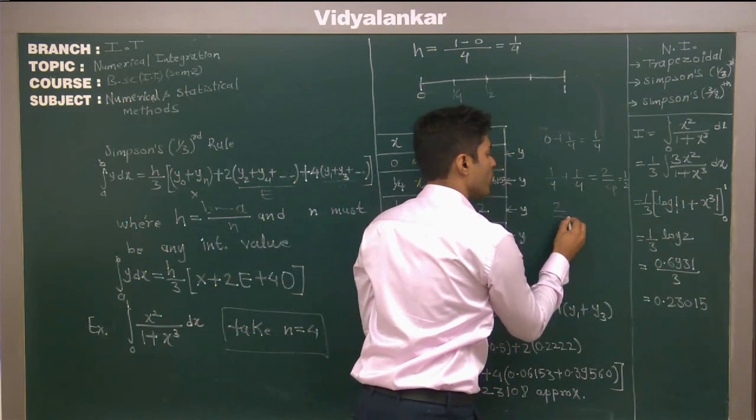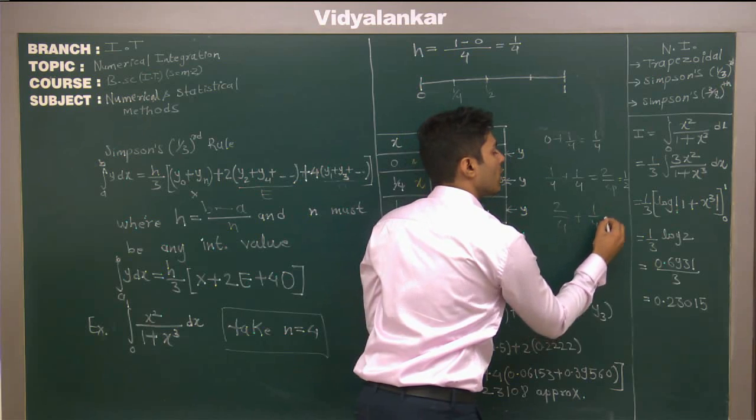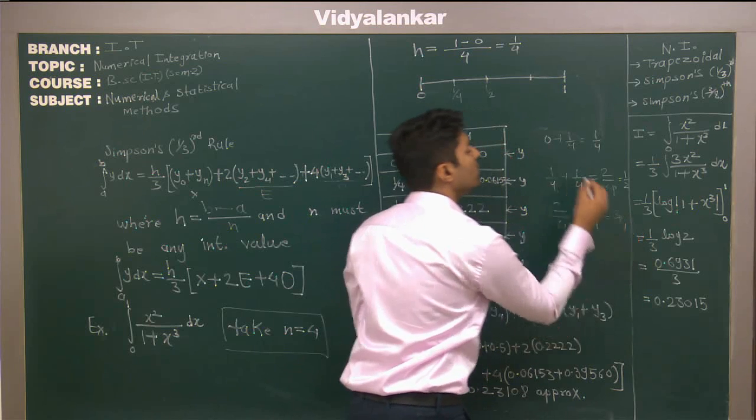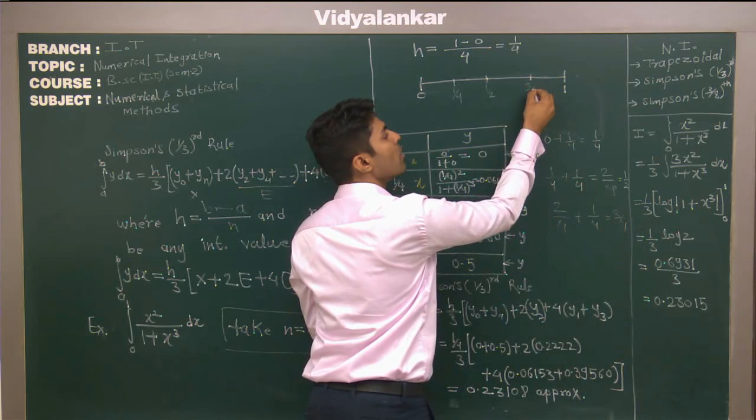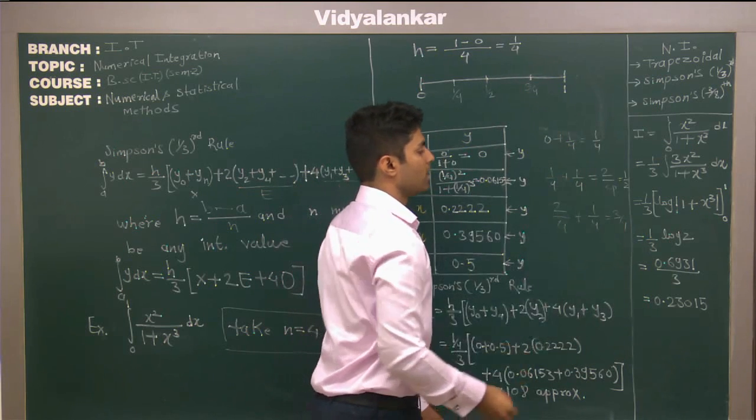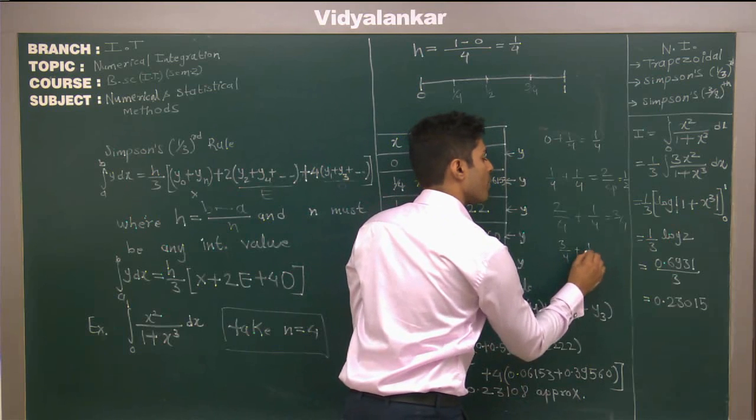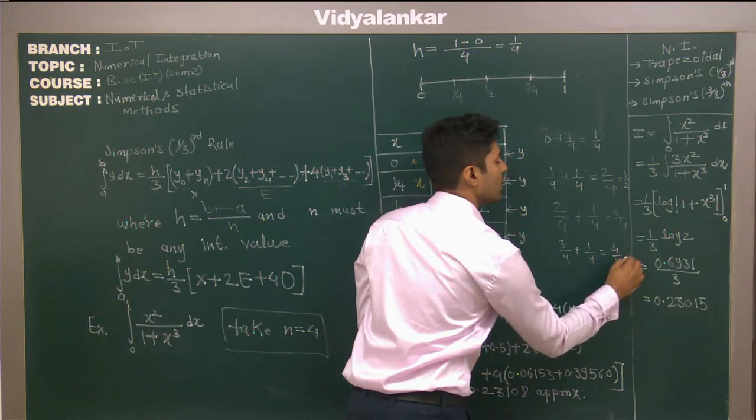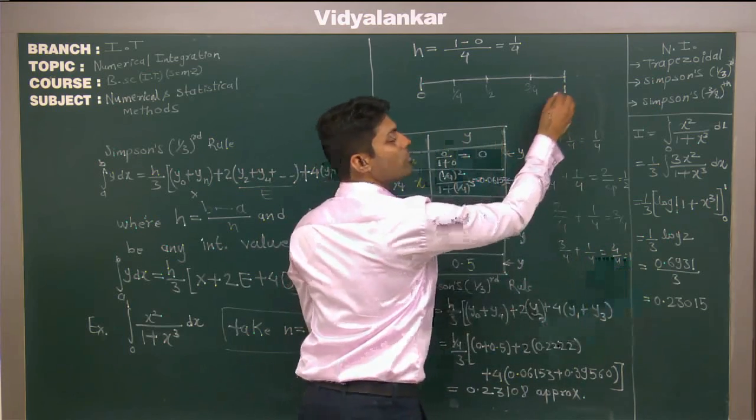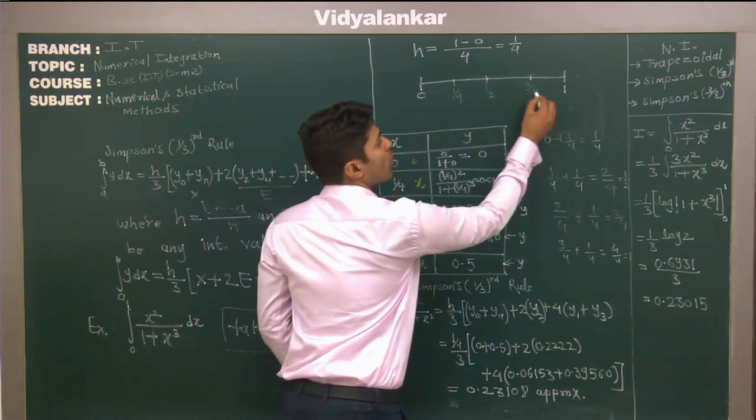Then 2 upon 4 plus 1 upon 4 gives you 3 by 4. This is the value of the interval, 3 by 4. Then finally when you add 3 by 4 plus 1 upon 4 you get 4 by 4. This is nothing but 1. This is your value of 1. Now these are the value of x terms.